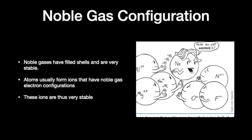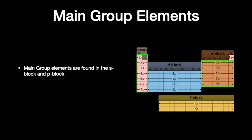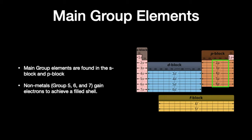Those ions are very stable. In our periodic table, we're familiar with the main group elements — those are found in the S block and the P block. Nonmetals in groups 5, 6, and 7 are all nonmetals, and they gain electrons to achieve a filled shell.